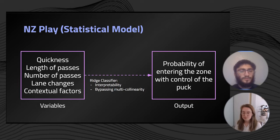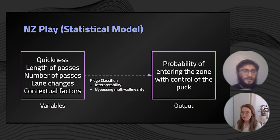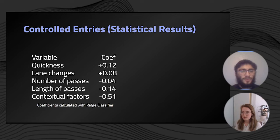Using these characteristics of neutral zone play, we built a statistical model using them as our independent variables, with the goal of predicting the probability of entering the zone with control of the puck. The model we used was a ridge classifier, chosen for two main reasons: first, we wanted interpretability of our coefficients in order to gather insights on our different characteristics and link them to hockey plays; and second, we wanted to bypass some of the multicollinearity that exists between variables and give us more stable coefficients for more precise analysis.